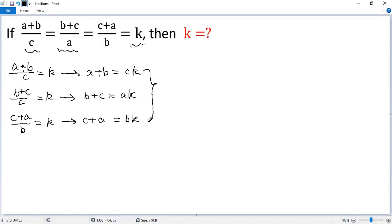Now we add these three equations together. So the left side becomes 2a plus 2b plus 2c, which we write as 2 times a plus b plus c. The right side, ak, bk, ck, we can write as k times a plus b plus c.